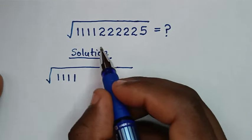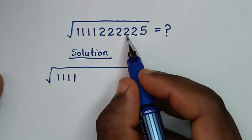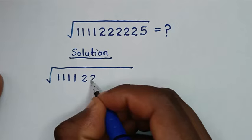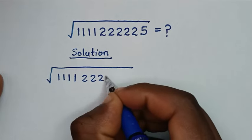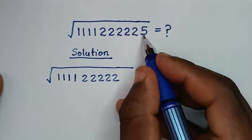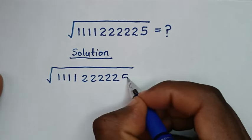And 2s, we have 1, 2, 3, 4, 5. So, 2, 2, 2, 2, 2, then this 5.